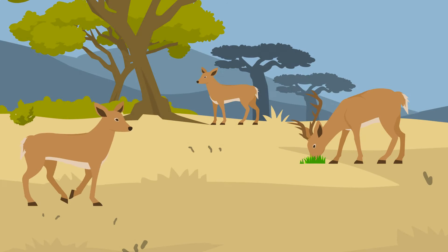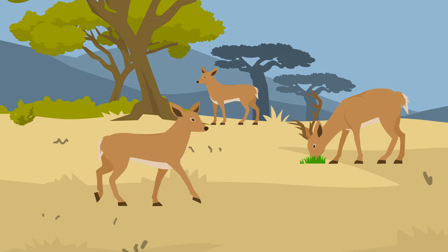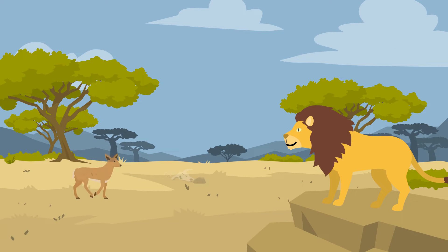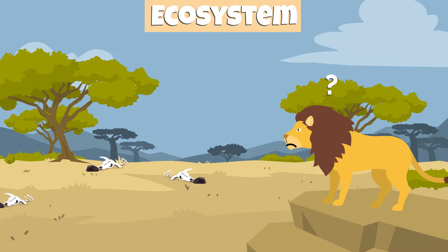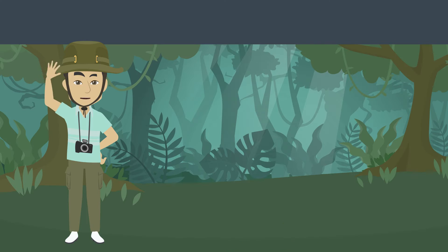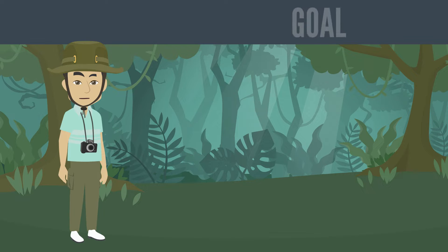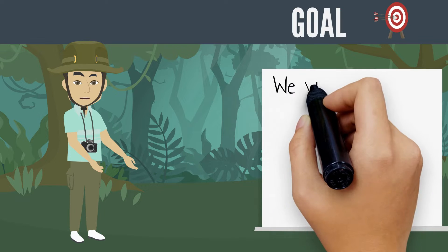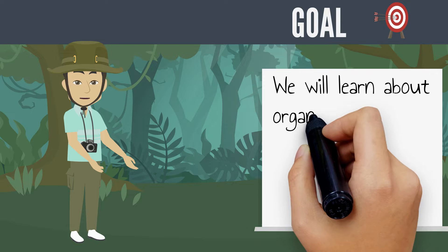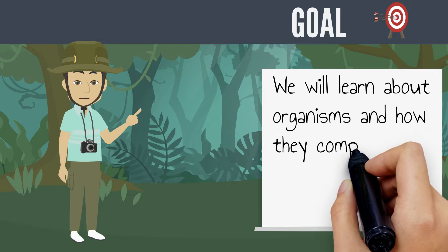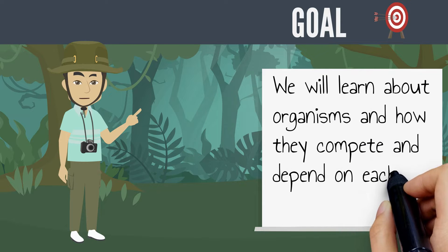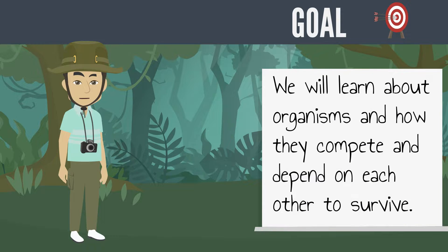Did you know that if the population of one species becomes extinct, it affects an entire ecosystem? Hi everyone, this is Mr. Lara, and in this video we will learn about organisms and how they compete and depend on each other to survive.